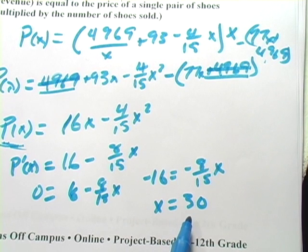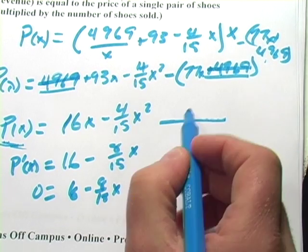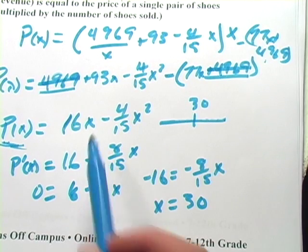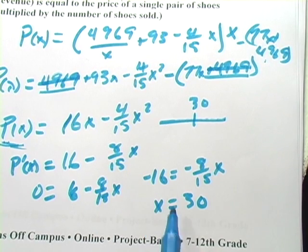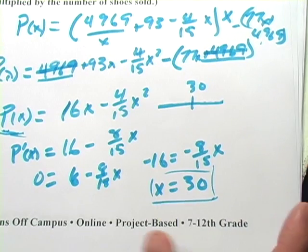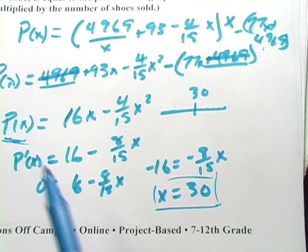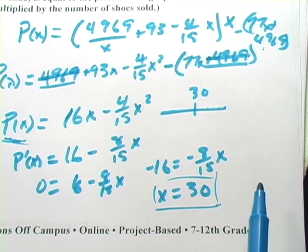Now if you want to double check to see if that's a max or a min, you would want to pick numbers on either side of 30 and plug them in there. And what you'll find is this is indeed a max for this function. So if you make 30 pairs of shoes, you're maximizing that profit. If you make fewer or more, you're getting a little less profit.